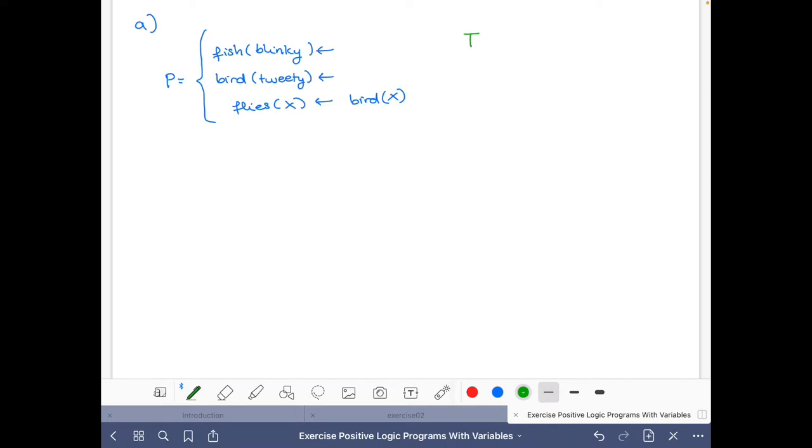So then all we have to do to find the Herbrand universe is to collect the constants that occur in the program. In this case we just have Blinky and Tweety. So we add them here, Blinky and Tweety, and I will only write the initials so that things are clear here in the page.